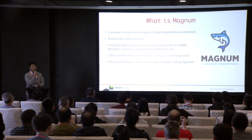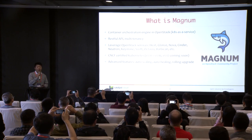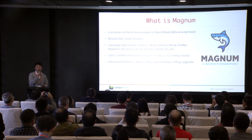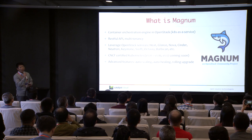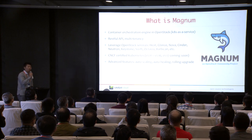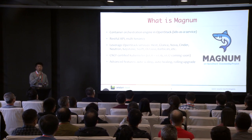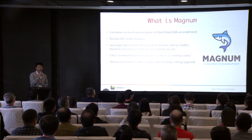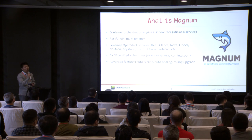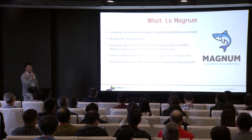So, back to Magnum. I believe most of you here today already know what Magnum is, so here I just give a brief introduction in case you are missing some important details or the latest update. In the beginning, Magnum was designed as the container orchestration engine in OpenStack, supporting Kubernetes, Docker Swarm, and Apache Mesos. However, as Kubernetes became the de facto standard, most contributions to Magnum today are only related to Kubernetes.